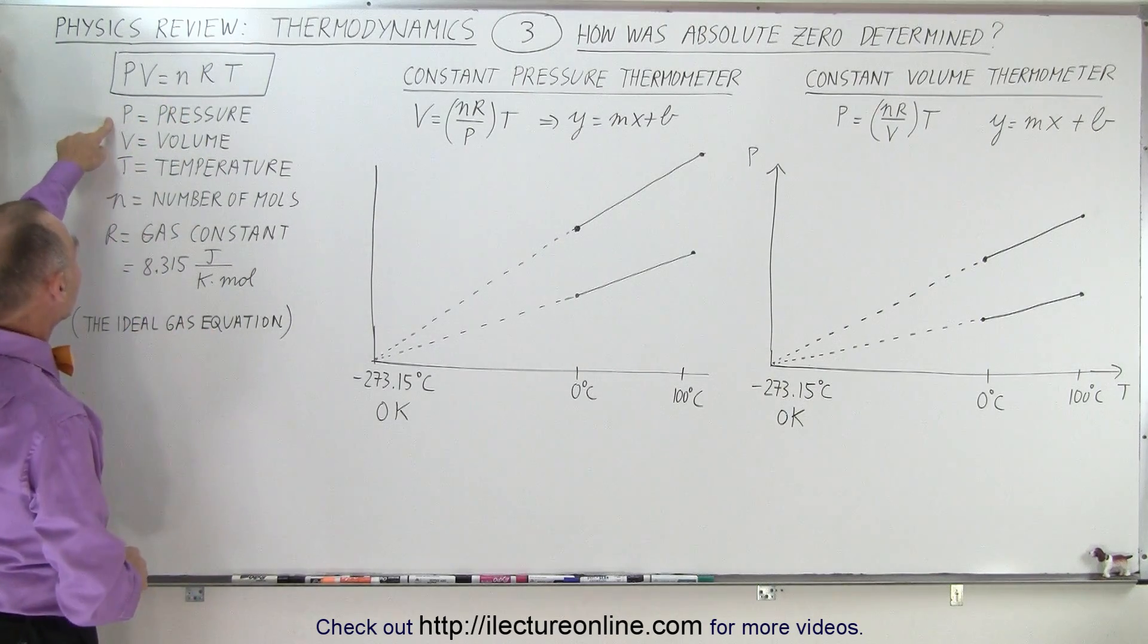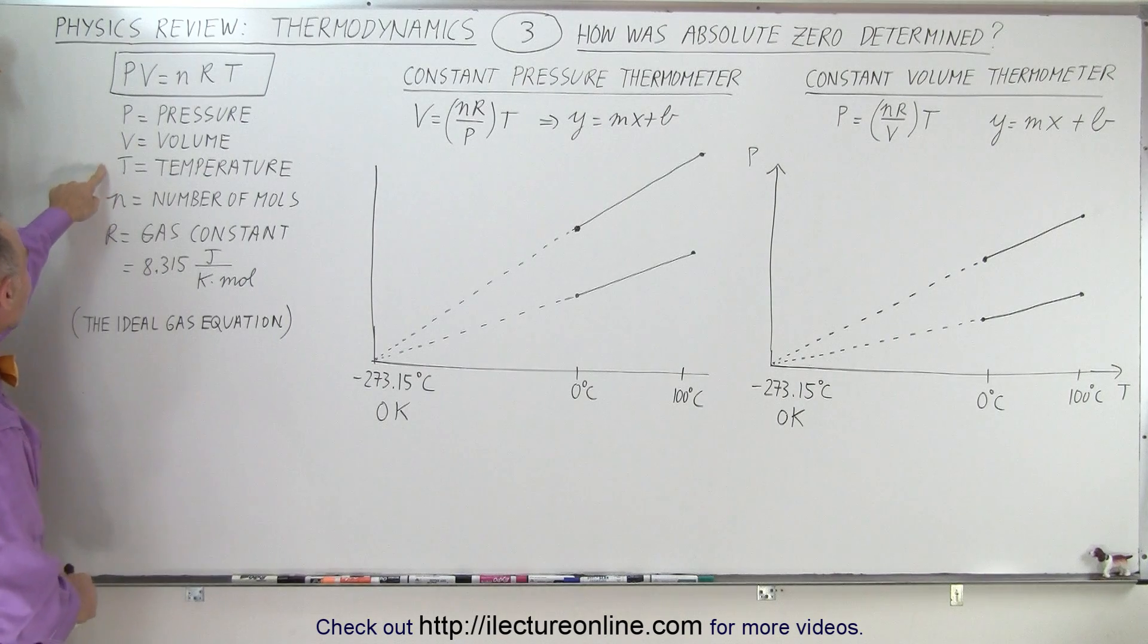Where for a gas, P stands for the pressure, V is the volume, T is the temperature, N is the number of moles, and R is the gas constant.